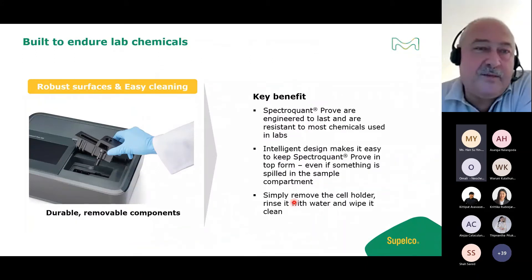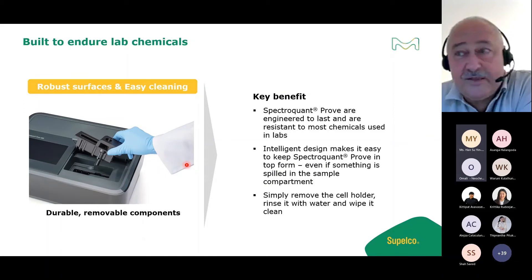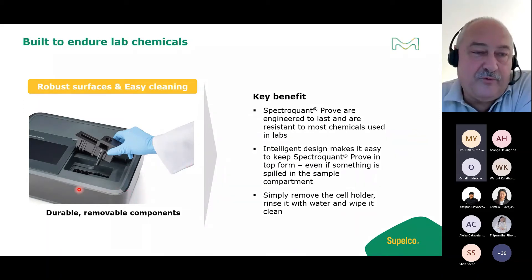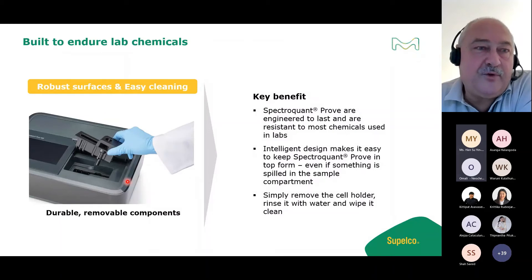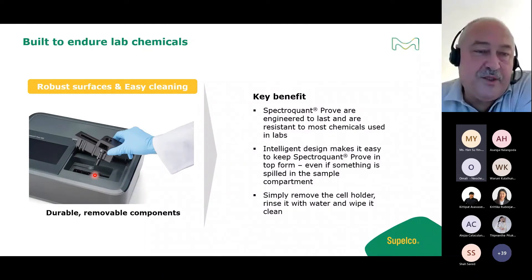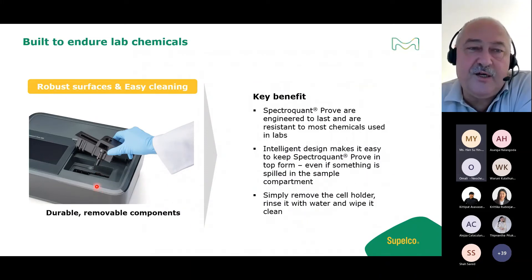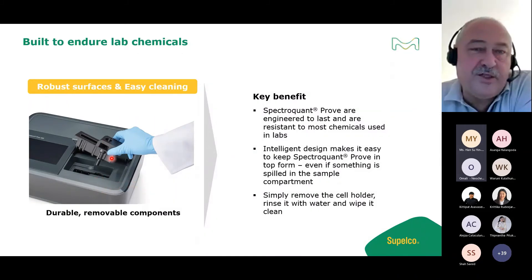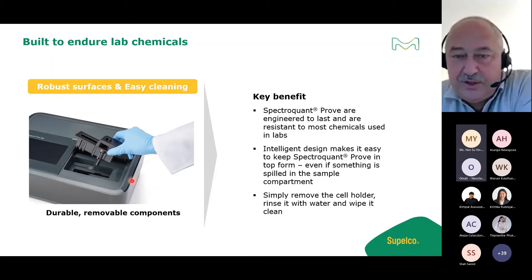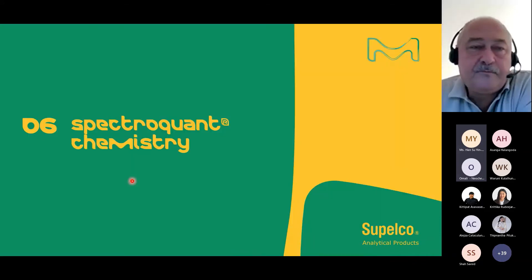Spillage is handled safely: the cell holder for round and rectangular cells is removable, and there is a drainage system built in. Any liquid spillage flows out through the drainage at the bottom and cannot contact any PCB boards due to the construction design. You simply remove the holder, clean it under water, dry it, and replace it - spillage is not a problem.